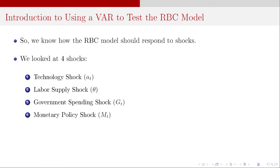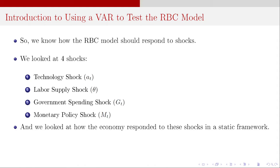The monetary policy shock is completely in line with the predictions of monetary neutrality, because this monetary policy shock leads to an increase in the money supply, which reduces the real interest rate and shifts the aggregate demand curve out. However, because there's no change in supply whatsoever, we end up having a perfectly flexible response of prices — all prices immediately respond — the LM curve shifts back, and we end up having no change whatsoever in any real economic variables. The money supply changed and the price level changed, which is consistent with the predictions of monetary neutrality.